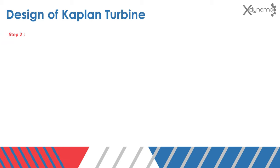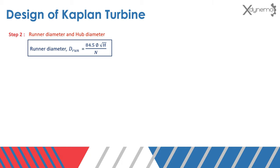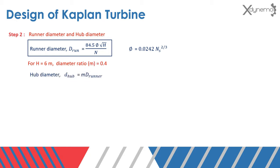Step 2: runner diameter and hub diameter. Runner diameter equals 84.5 times phi times root H divided by N. Here is the equation to calculate the value of phi. For 6 meters head, the diameter ratio M equals 0.4. Hub diameter equals M times runner diameter.